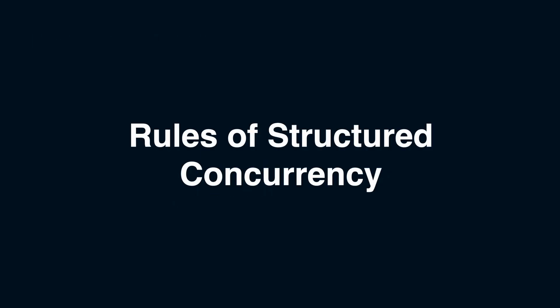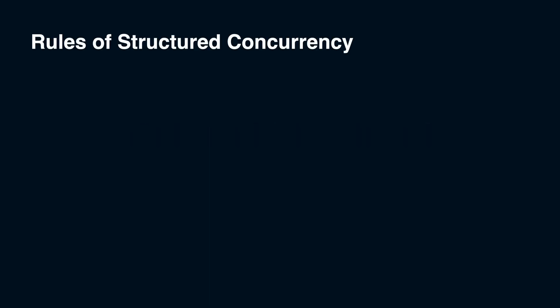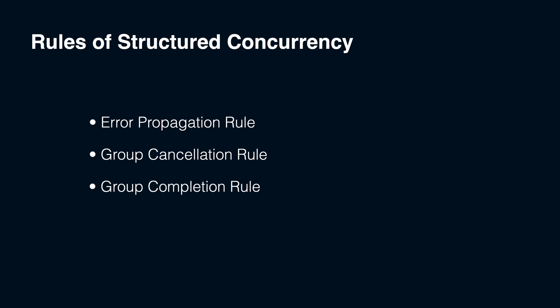Next, let's try to define the rules of structured concurrency. The task tree structure enables cooperative operations, offering features such as priority escalation — when setting a higher priority on a child task, the parent task's priority is automatically escalated. We can consider those features as structured concurrency rules: error propagation rule, group cancellation rule, and group completion rule. If you like acronyms for better memorization, you can use EGG. We will explore how these rules work within structured concurrency tasks and compare them with the behavior of nested unstructured tasks. These rules apply to tasks that are part of a single task tree structure, but they do not work for nested unstructured tasks.